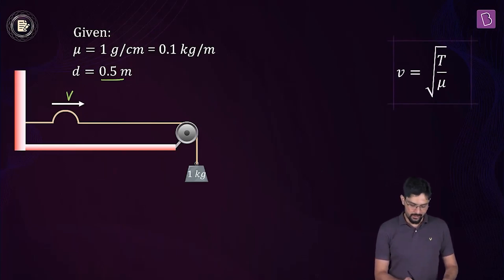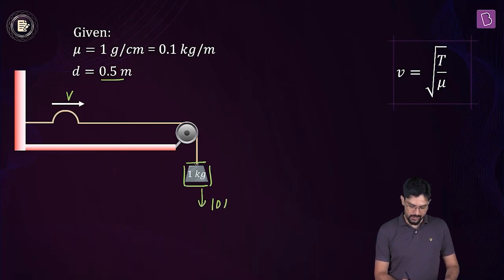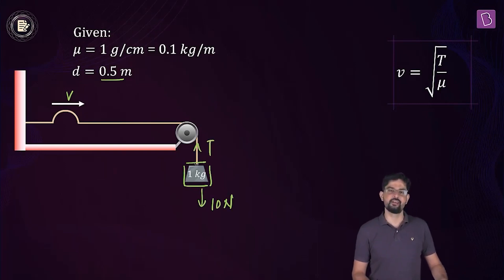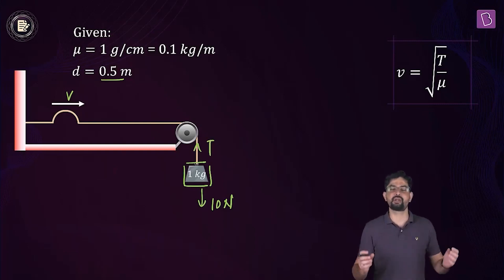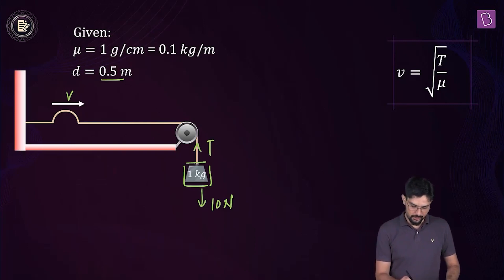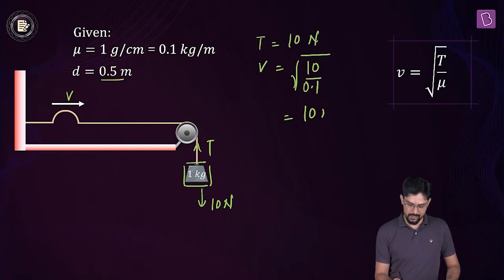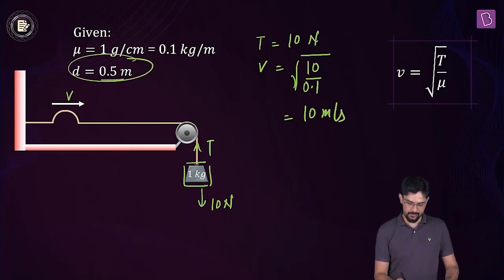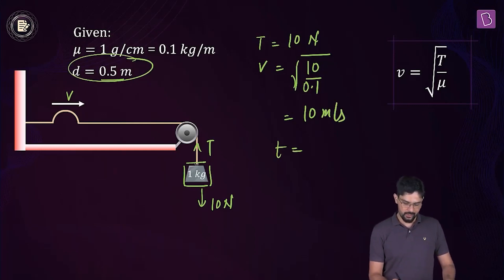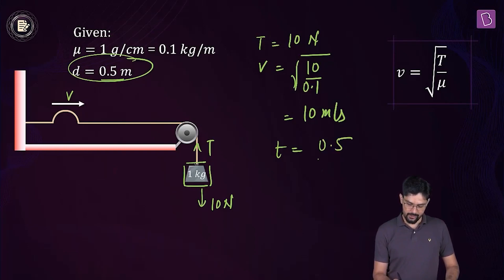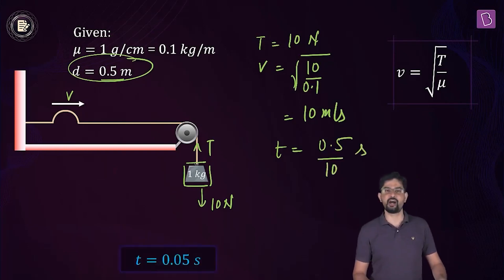To find tension T, we use the block which is in equilibrium. The external forces on the block are gravity, which is 10 newtons downward, and the tension in the string, which is the same everywhere because the string is massless. So the tension is 10 newtons, giving wave speed equal to square root of 10 divided by 0.1, which is 10 meters per second. Time taken is distance divided by speed, which is 0.05 seconds.